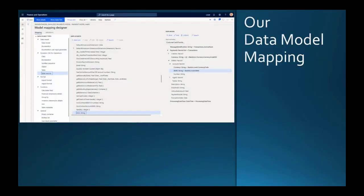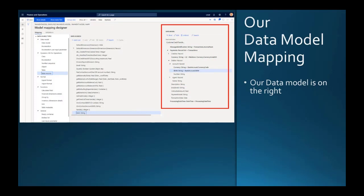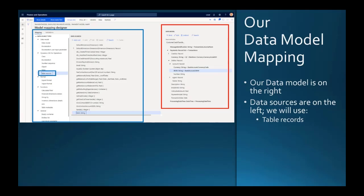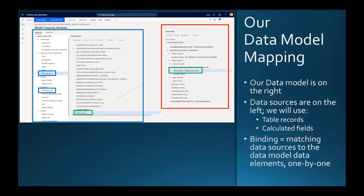Our data model mapping designer looks like this. On the right, we can see is our data model. On the left, our data sources. And these data sources can, in our case, we're going to use table records. We will use calculated fields. Of course, we have many other data source types available, but we're going to use these two for today. And then we'll do the bindings, which means we have to find the right element on the left and on the right. That means in the data source and in the data model and we bind them together. And this establishes the information which data model will need when it will have to fetch data from the data source. Now we're going to see that in a demo.